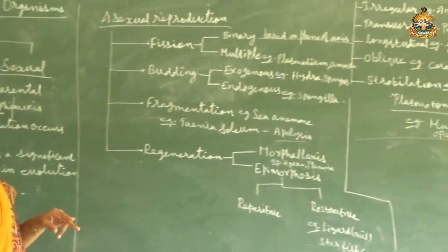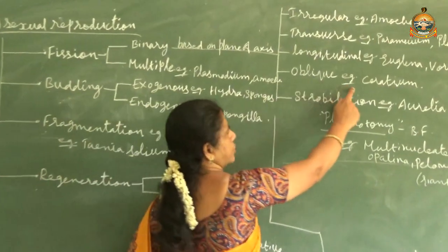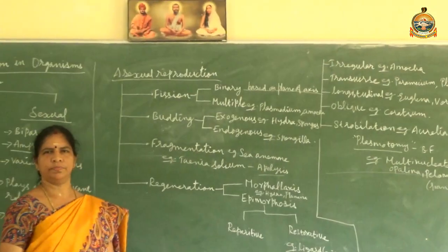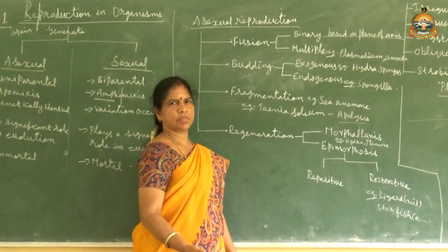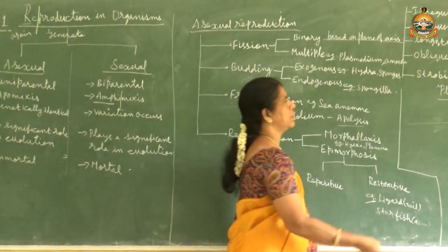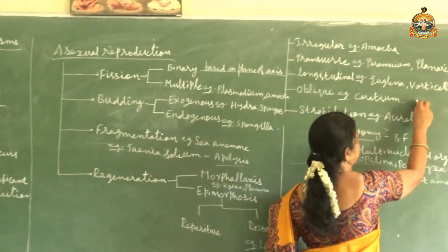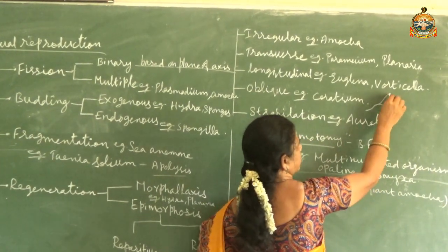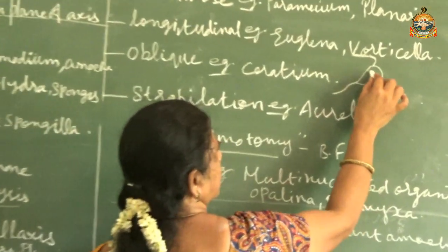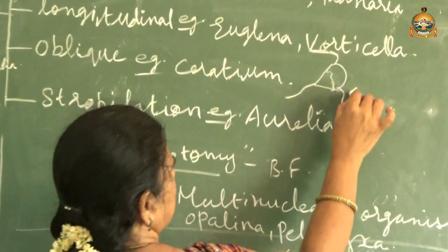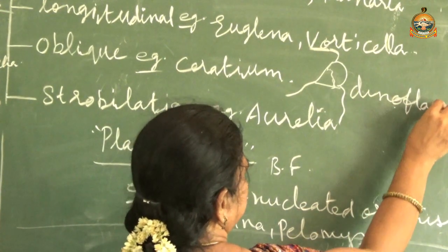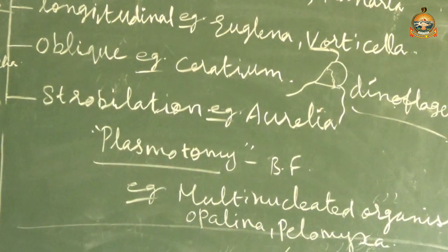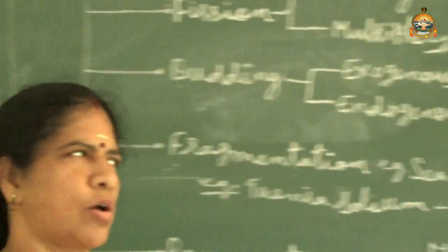Next is oblique binary fission, which occurs in Ceratium. In oblique binary fission, division takes place in an oblique manner - the line of division is at an angle, similar to an oblique line.